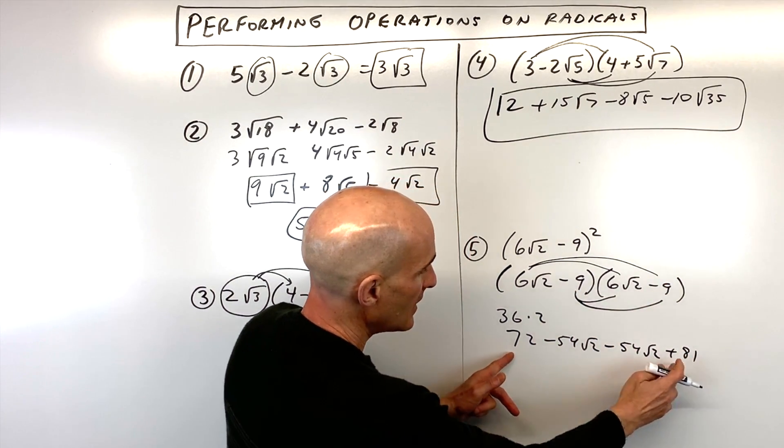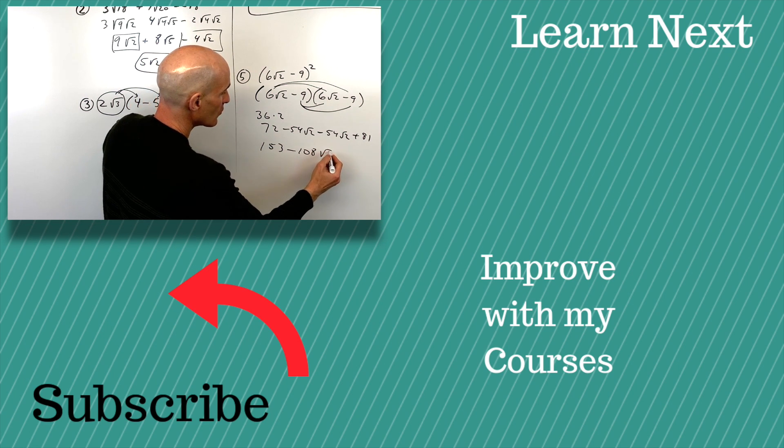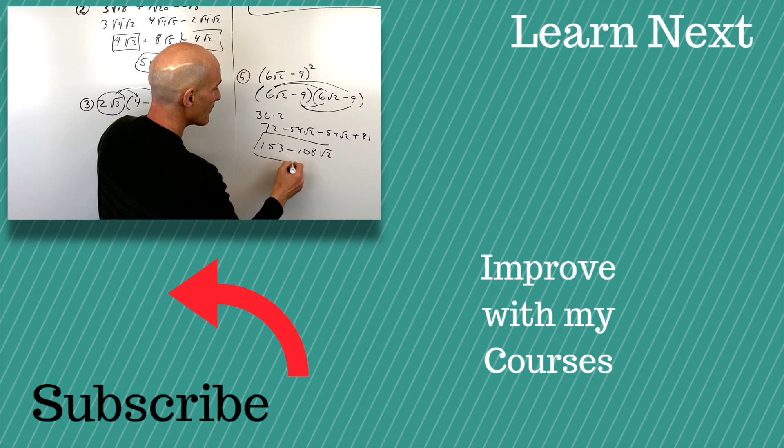So if we combine like terms, we get 153 minus 108 square roots of two. And that's our final result.